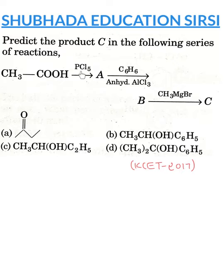Acetic acid plus PCl5 gives A. A plus benzene and anhydrous AlCl3 gives B. B plus Grignard reagent gives C.